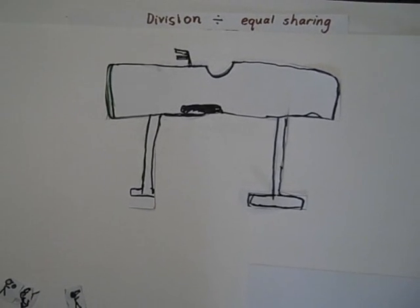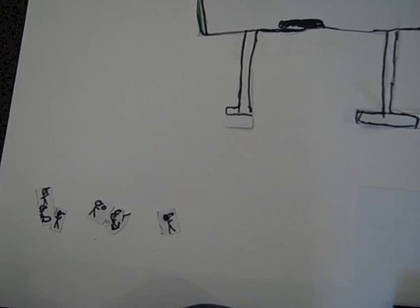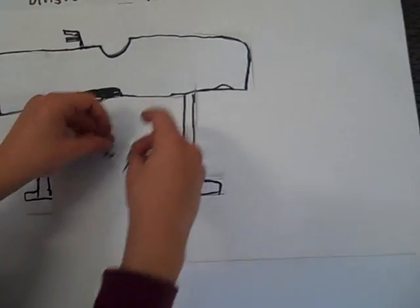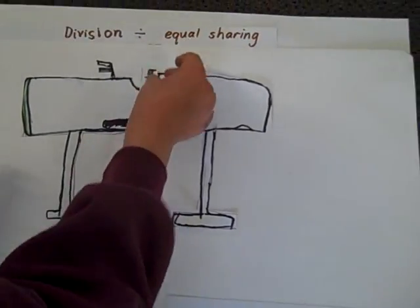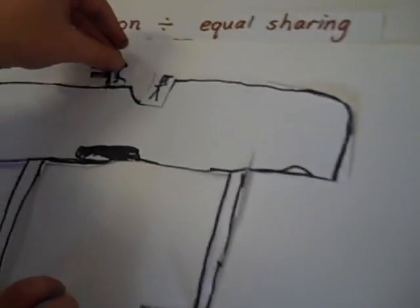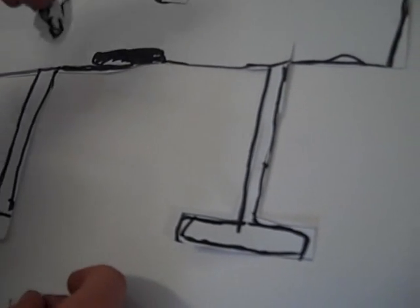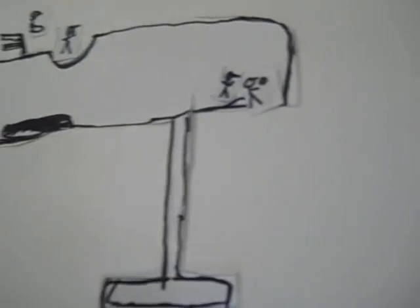I have 6 clone troopers and I need to share them into equal groups. One, two. One, two at the top. Two on the bottom. One, two on the bottom. One, two on the bottom. One, two on the top.